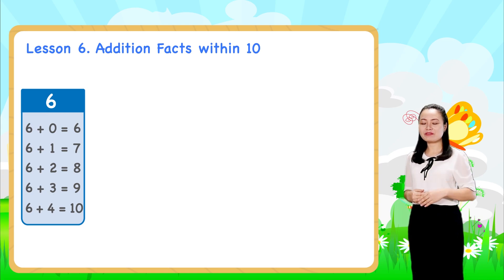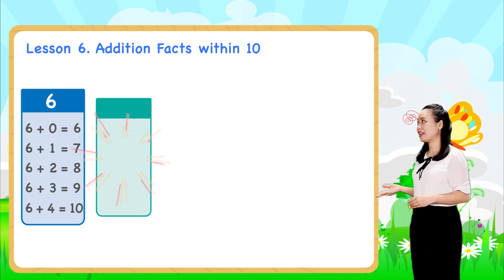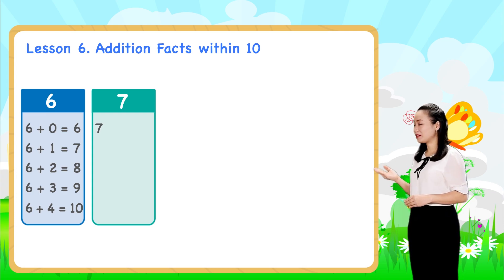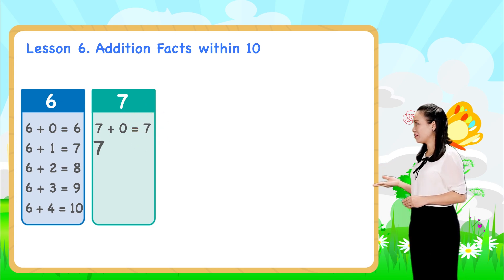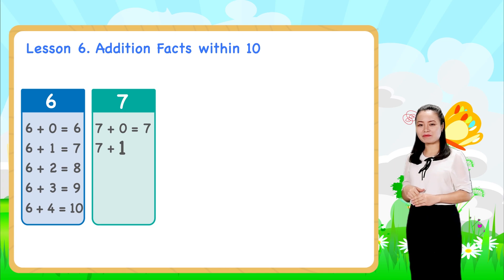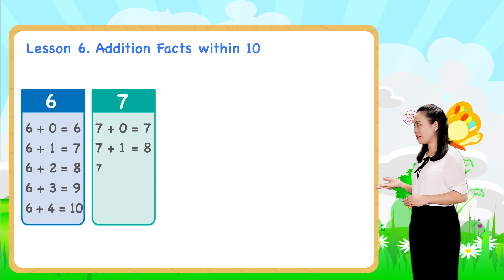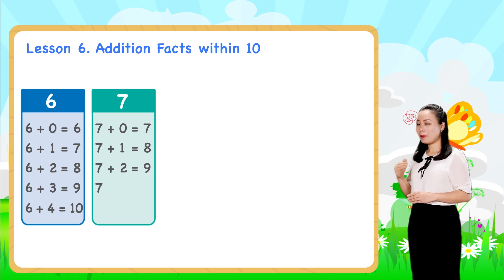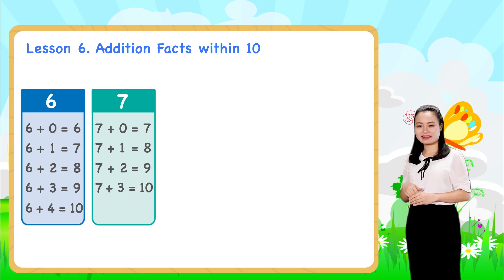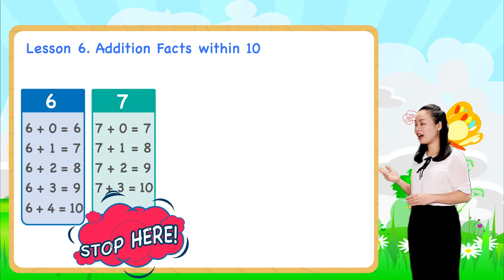Next, we learn addition by seven. Seven plus zero equals seven. Seven plus one equals eight. Seven plus two equals nine. Seven plus three equals ten. We'll stop here for now.